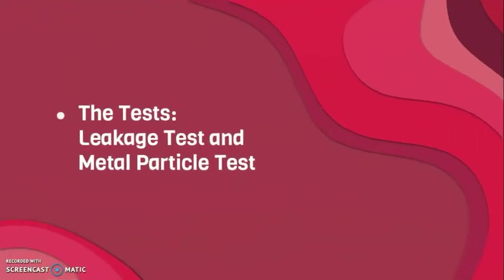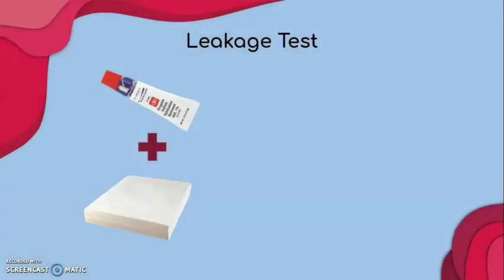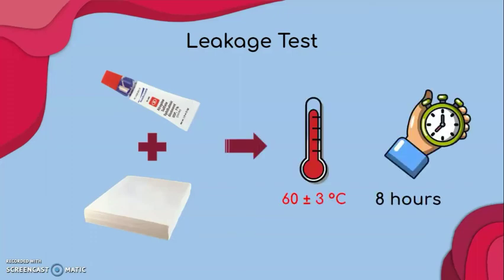As for the tests carried out, due to time constraints, I will only briefly explain the tests. Firstly, the leakage test evaluates the intactness of the ointment tube and seal. Ointment tubes will be selected and the exterior surface will be cleaned. After that, they will be horizontally placed over absorbent blotting paper and together placed into an oven, maintained at 60 ± 3 degrees Celsius for 8 hours, and then the leakage is observed.